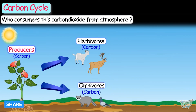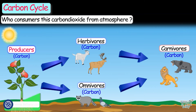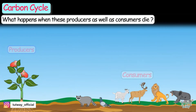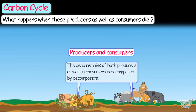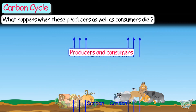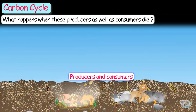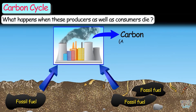These herbivores and omnivores are consumed by carnivores, and thus carbon becomes a part of all the producers and consumers. When these producers and consumers die, the dead remains of both are decomposed by decomposers — that is, the carbon in their bodies is returned to the atmosphere as carbon dioxide. These dead remains, when buried for thousands of years, turn into fossil fuels, and we use them for combustion, which also releases carbon into the atmosphere.